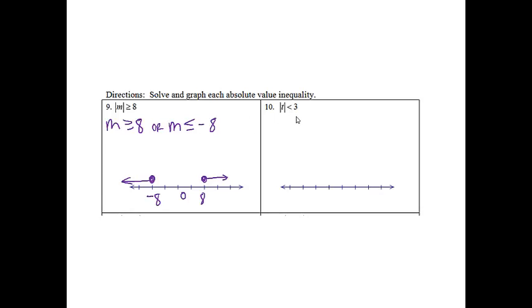Problem 10: the absolute value of t is less than 3. Writing my two inequalities, I'm going to have t is less than 3. My second one will be t is greater than negative 3. So we're ready to graph.